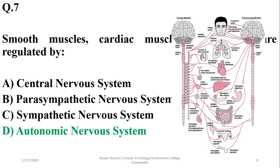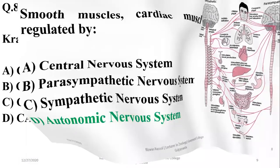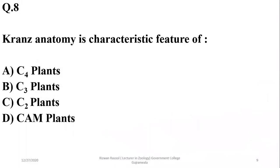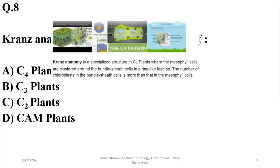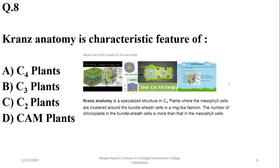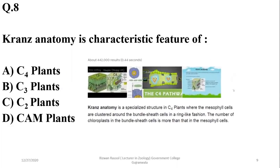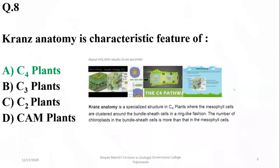Question 8: Kranz anatomy is a characteristic feature of C4 plants, where mesophyll cells are clustered around the bundle sheath cells in a ring-like fashion. So alpha is the right option.